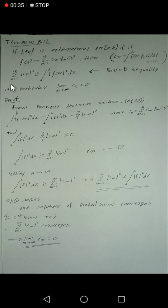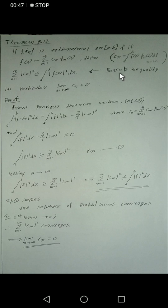Then σ from n=1 to infinity of cₙ² is less than or equal to ∫ from a to b of |f(x)|² dx. This is Bessel's inequality, and in particular, the limit as n tends to infinity of cₙ equals 0. This is how we prove it.